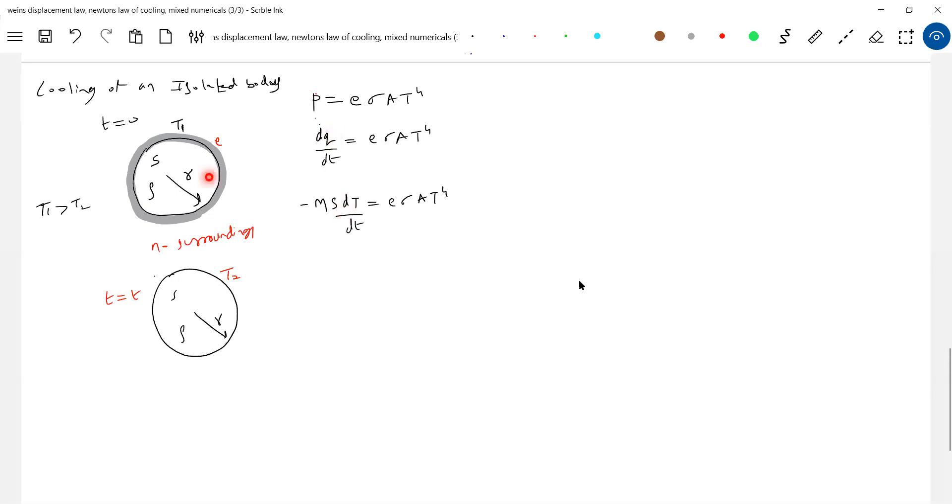So this is a body. Now rest is all integration. Let's go for this one. So dt by dt, dt by T, T to the power of 4 is equal to e sigma A ms dt.